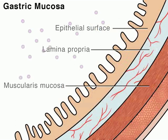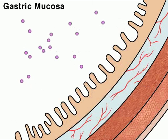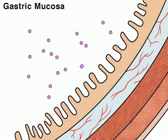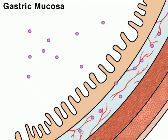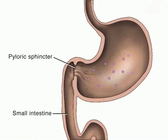Acidic drugs are absorbed in the stomach because its acidic contents cause the acidic drugs to remain unionized, uncharged, for easy absorption.